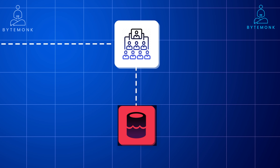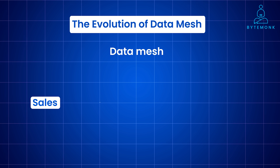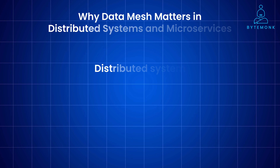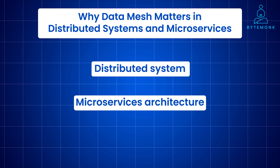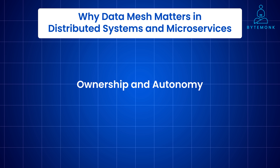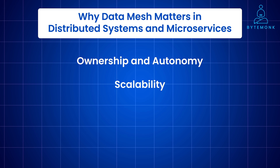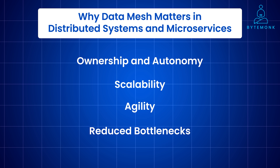Data mesh architecture emerged as a response to the limitations of centralized data storage and processing models. It allows for a decentralized approach, treating data as a product managed by cross-functional domain teams. This shift enhances data accessibility and quality across different business units and fosters a more collaborative and agile data culture. In a distributed system or microservices architecture, different services own different parts of your application's data. A data mesh aligns perfectly with this paradigm, giving teams more control and ownership, better scalability, and faster innovation without depending on a central team.